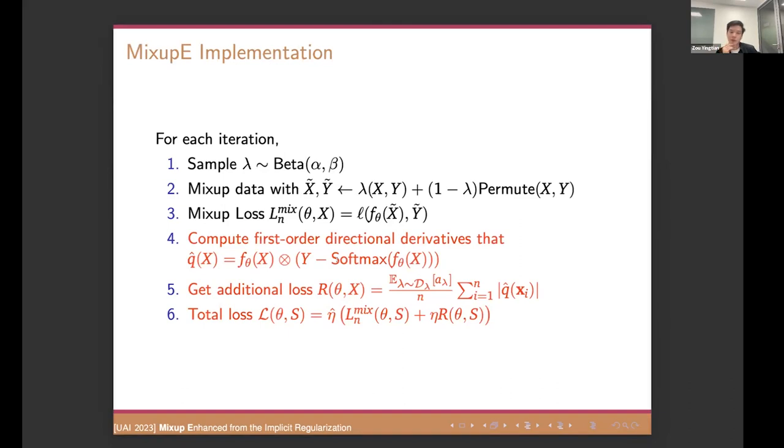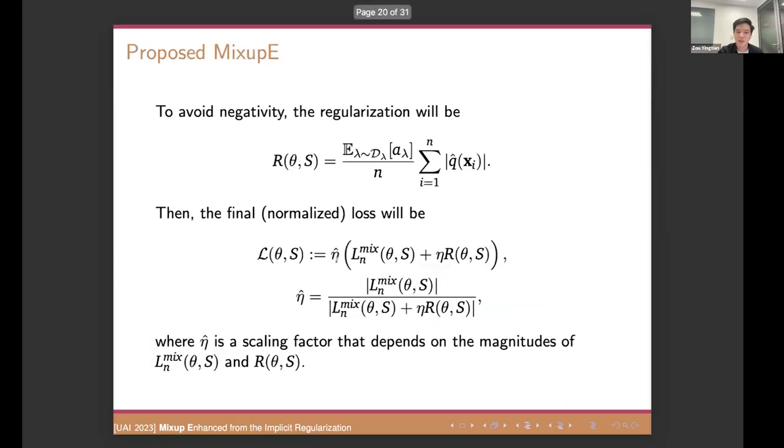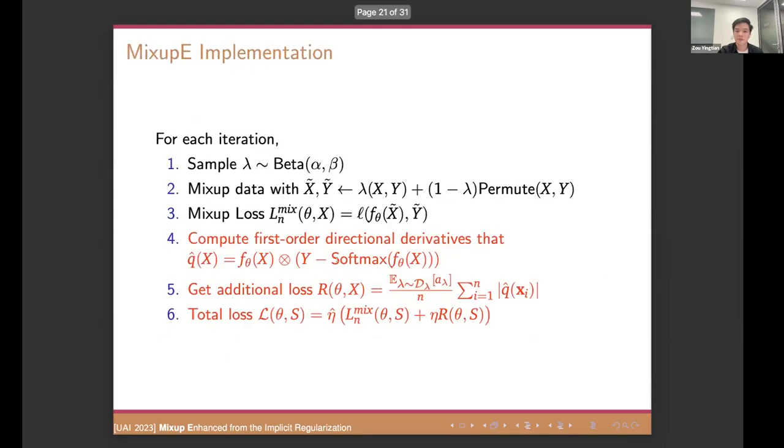But remember that we are going to propose a loss function. So it should be positive. To avoid the negativity, the regularization will be where we just take the absolute value of the regularization. Then the final loss will be looked like this. So here, the eta is the only introduced hyperparameter that controls the strength of your regularization. Then eta hat is actually going to normalize your loss scale. So it's just a simple strategy. And so in this way, our MixupE is very easy to implement. For each iteration, we just sample a lambda, the mixup coefficient from some distribution. Then we mixup our data. Then we compute our mixup loss. So these first three steps follow the standard mixup procedure. Then for our proposed MixupE, we have other three extra steps. So we have to compute the first order directional derivatives. First, the q hat, as we mentioned before here. And then we can get our additional loss, the R, right? Regularization. Then we compute our total loss. So optimize our total loss gives our new algorithm instead of the standard mixup. Okay.